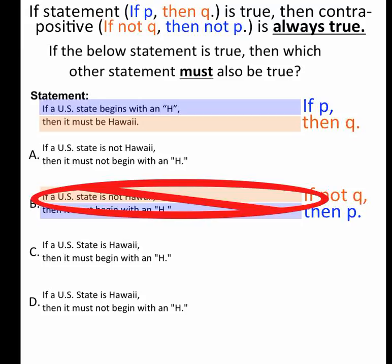If a US state is Hawaii, well, that's just starting with if Q. It's not the opposite. That's the same thing. So I know that's not the right one.